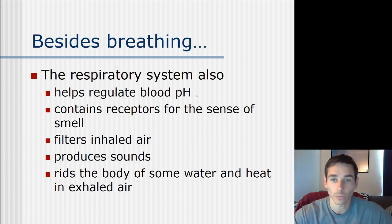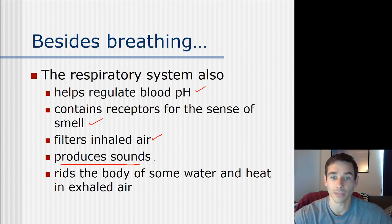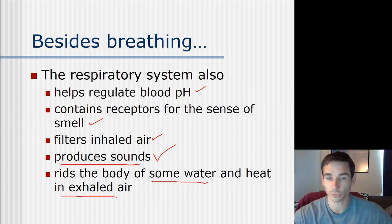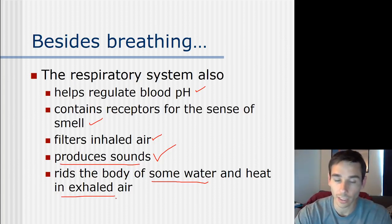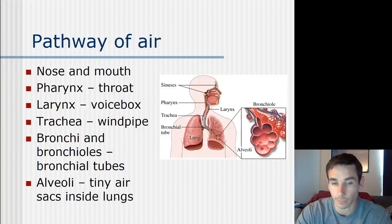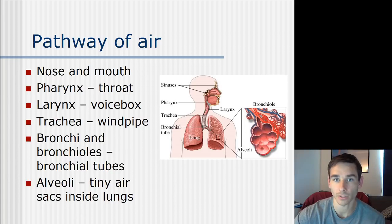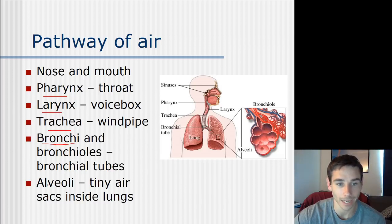Other than breathing, the respiratory system also regulates our pH, allows us to smell things, filters the air, and makes sounds - like speech. We also exhale water and heat, which you've seen when you breathe on a mirror and it fogs up. We're going to follow the pathway of air, stopping at: nose and mouth, pharynx, larynx, trachea, bronchi, and eventually the alveoli.